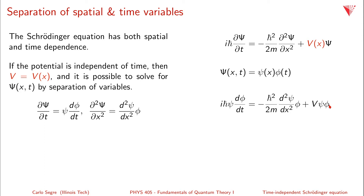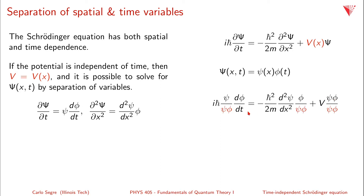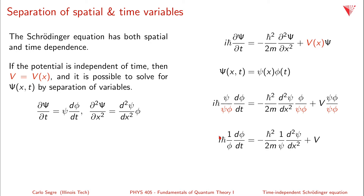We haven't quite separated the variables yet. We have to get rid of all spatial dependence on one side and the time dependence on the other, and we can do that by dividing by ψφ. Doing so, the spatial dependence cancels out on the left, leaving only time dependence, and the time dependence cancels out on the right, leaving only spatial dependence. The final separated equation is: i h-bar (1/φ)(dφ/dt) equals minus h-bar squared over 2m times (1/ψ)(d²ψ/dx²) plus the potential V.